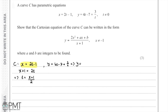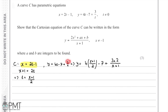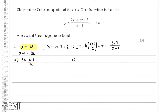Substituting, y = 4 × (x+1)/2 - 7 + 3 / ((x+1)/2). Since we're dividing by a fraction, we multiply by its reciprocal, so 3 / ((x+1)/2) becomes 3 × 2 / (x+1) = 6/(x+1). This gives us y = 4(x+1)/2 - 7 + 6/(x+1).